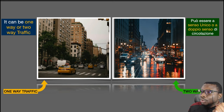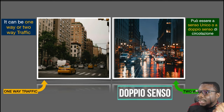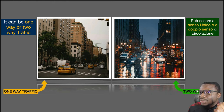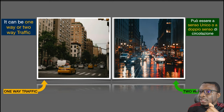On the other photo we have two-way traffic — you can see some vehicles coming towards one direction and others going towards the opposite direction. So these are the two types of traffic that you can find on the road.